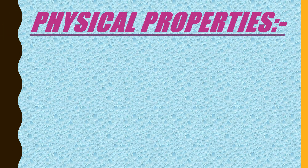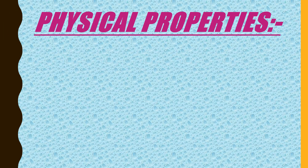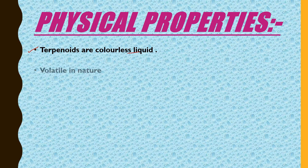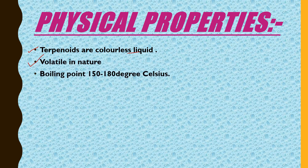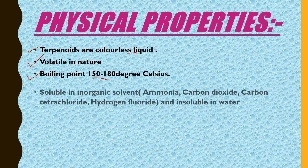Next, we are going to study the physical properties of terpenoids. The first physical property is that terpenoids are colorless liquids. Second, they are volatile in nature. The boiling point of terpenoids is in the range of 150 to 180 degrees Celsius.